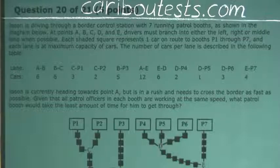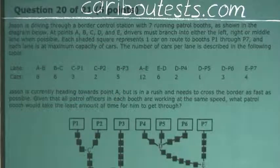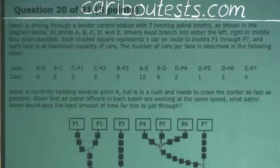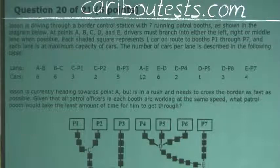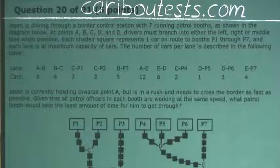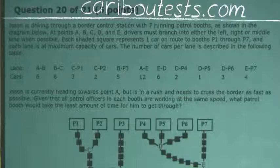The number of cars per lane is described in the following table. Jason is currently heading towards point A, but is in a rush and needs to cross the border as fast as possible. Given that all patrol officers in each booth are working at the same speed, what patrol booth would take the least amount of time for him to get through?